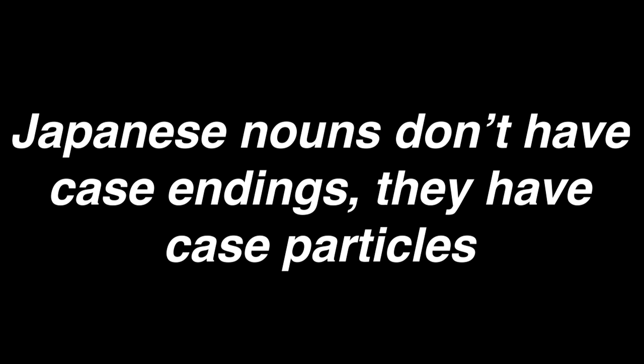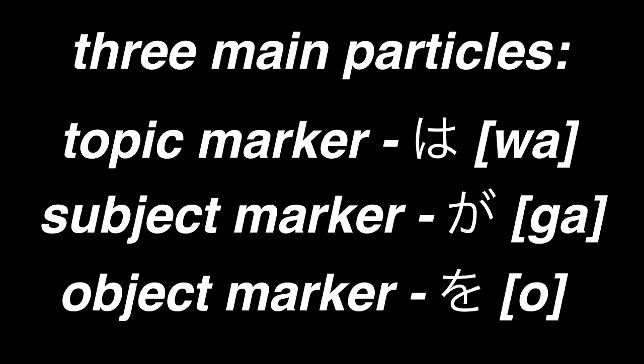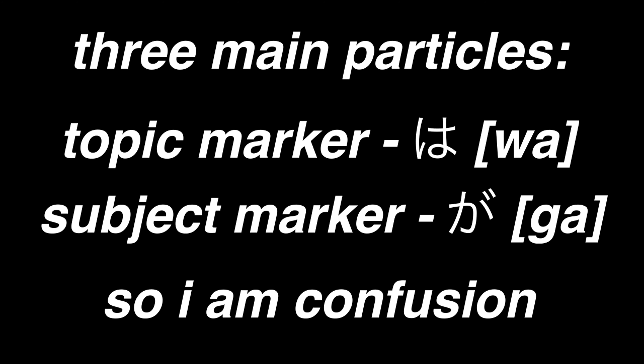Japanese doesn't inflect nouns for cases, but Japanese does have case particles. The three main particles are the topic marker wa, the subject marker ga, and the object marker o. The topic and subject marker get confused a lot, but you can think of it as: the topic marker indicates what's being talked about, and the subject marker indicates what's carrying out the action.